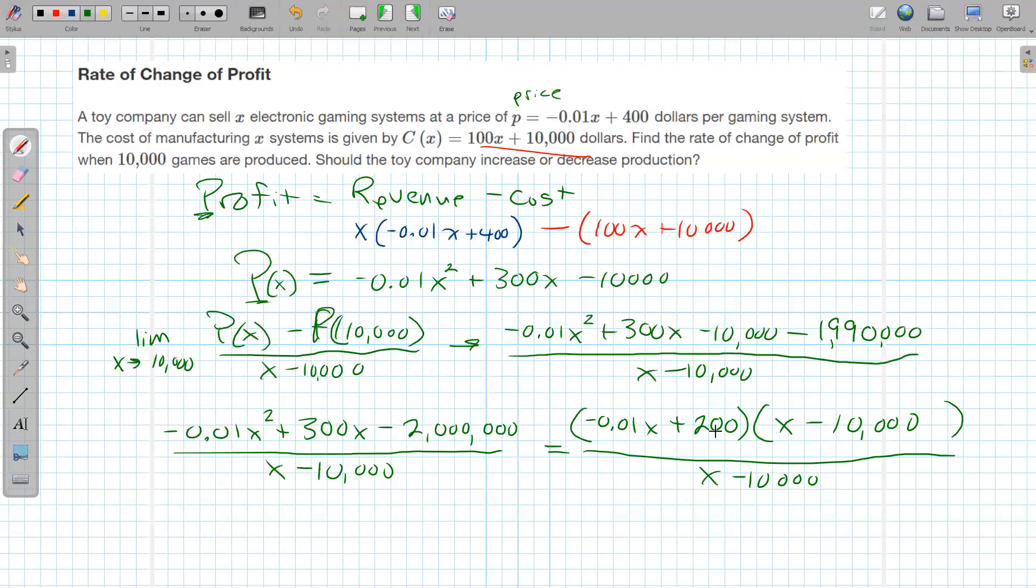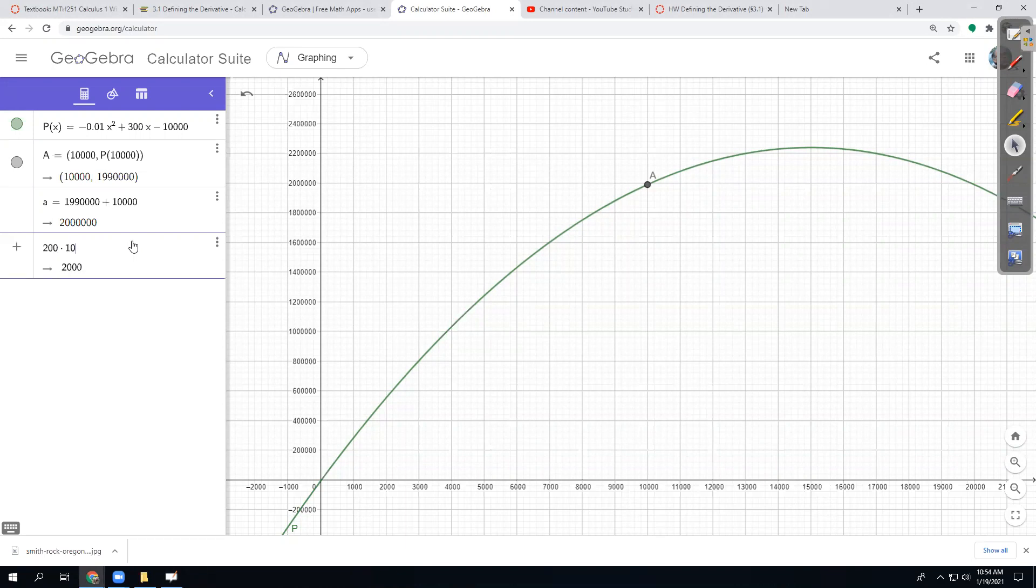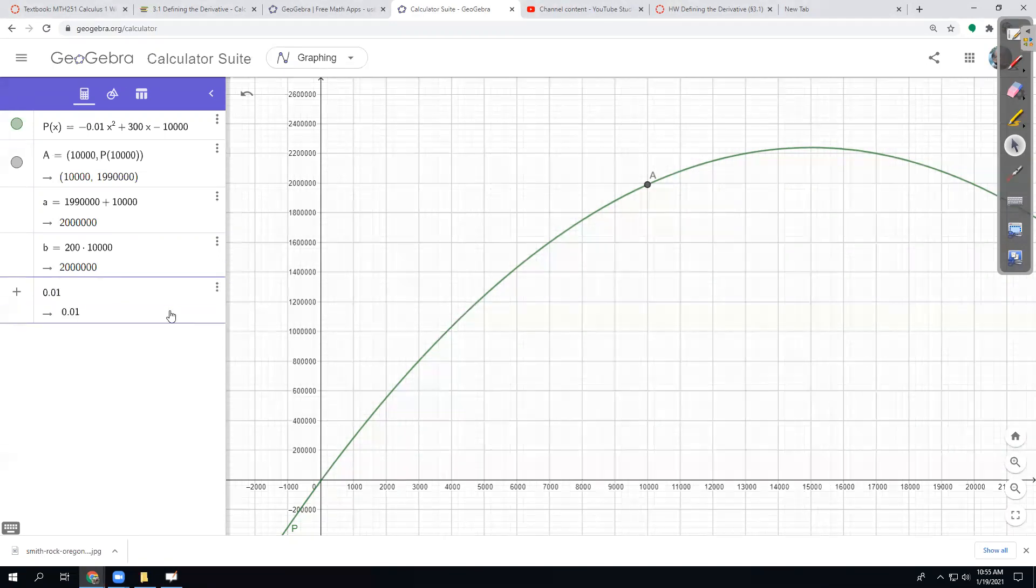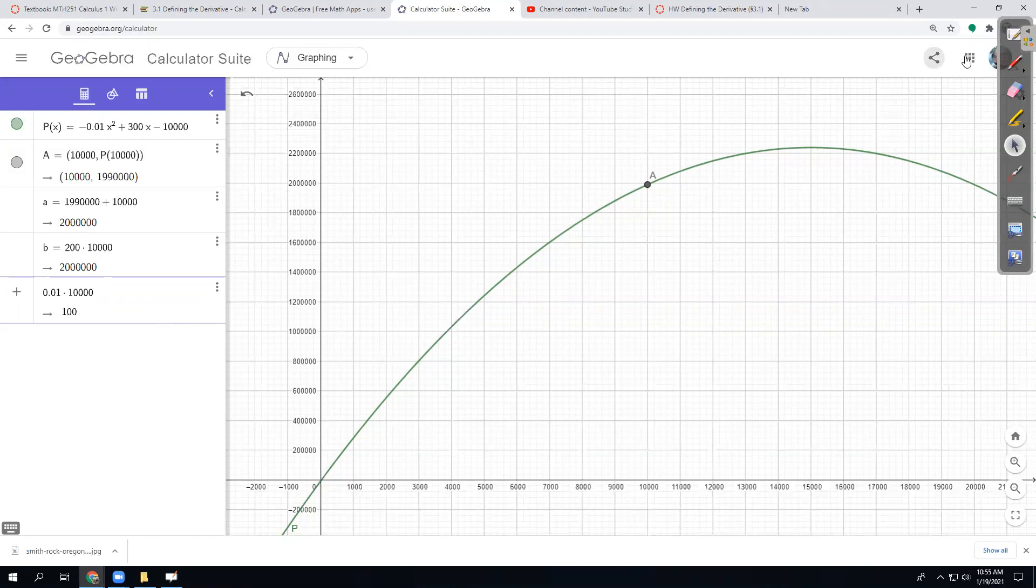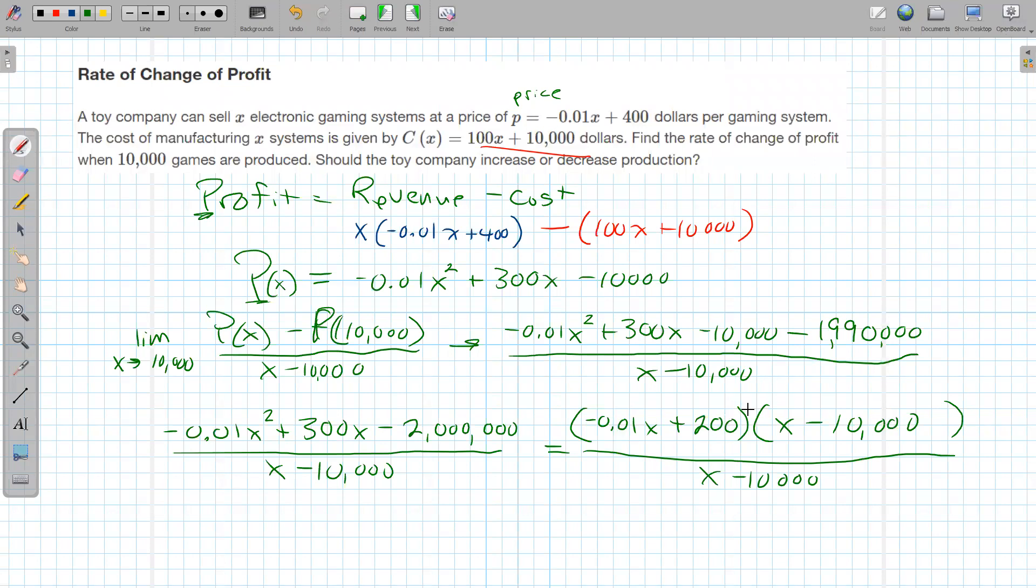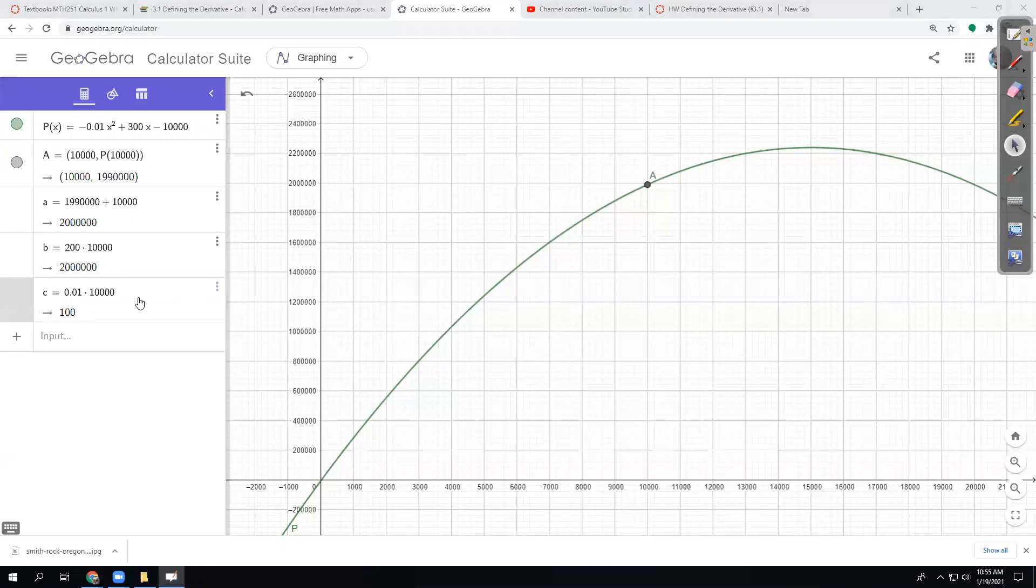And we could double check that by multiplying it out. I think that looks good. So let's see. Yeah, I guess we better check by multiplying that out. So 200 times 10,000 should be 2 million. Yep. And then for the middle terms, we're going to have 0.01 times 10,000. And then what are the signs there? So that's going to be a negative times a negative. And then 200 times 1 should give us the 300 in the middle. Okay. So that checks out. Let me check those coefficients.